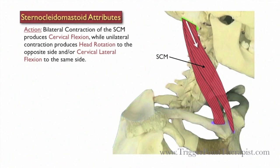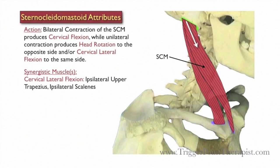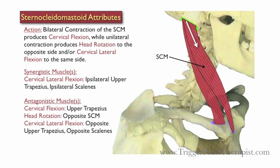Bilateral contraction of the SCM produces cervical flexion, while unilateral contraction of the SCM produces head rotation to the opposite side and/or cervical lateral flexion to the same side. The ipsilateral upper trapezius and the ipsilateral scalenes assist the SCM during cervical lateral flexion. The upper trapezius opposes the SCM during cervical flexion. The opposite SCM opposes the SCM during head rotation. The opposite upper trapezius and the opposite scalenes oppose the SCM during cervical lateral flexion.